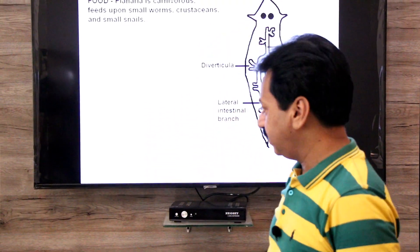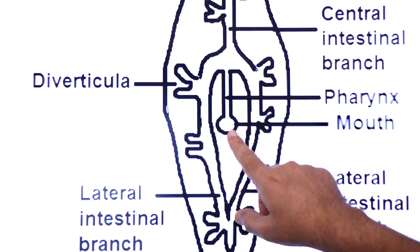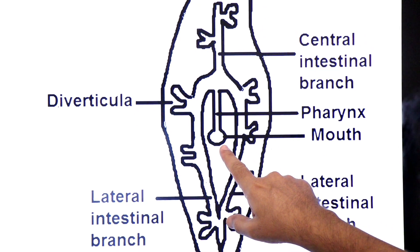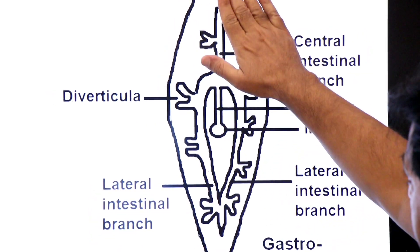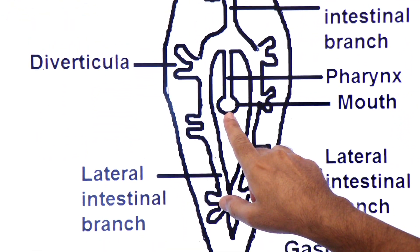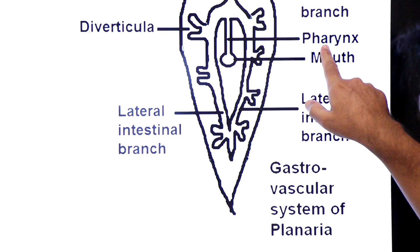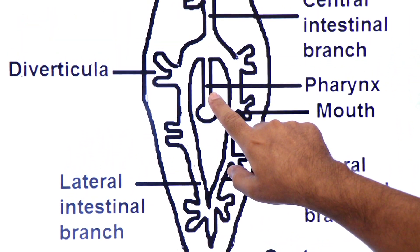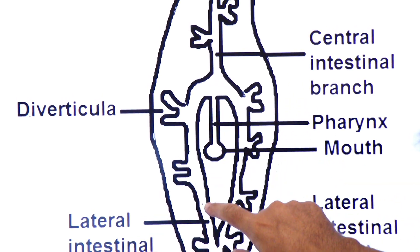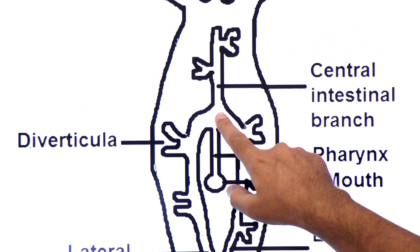Now see here the gastro-vascular system of planaria. The mouth is central in position — not located in the head region, but at the center of the body. It opens into a tubular structure called pharynx, and the pharynx opens into the intestine.